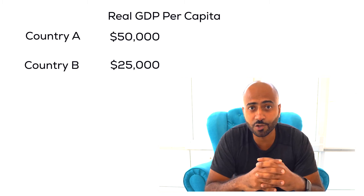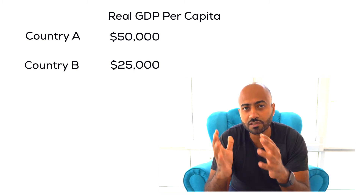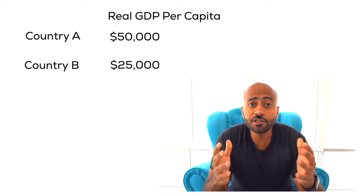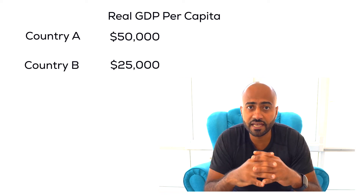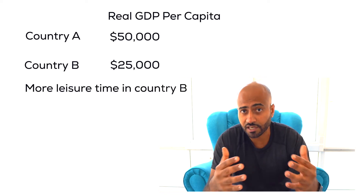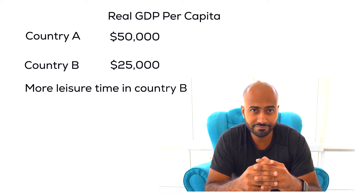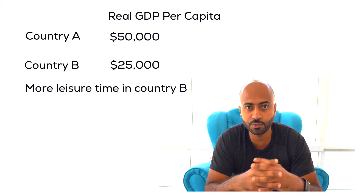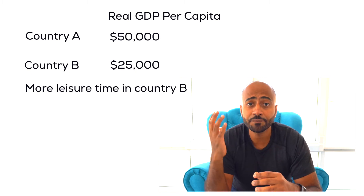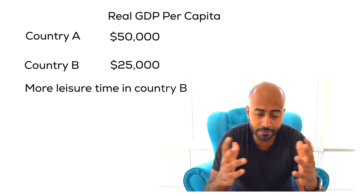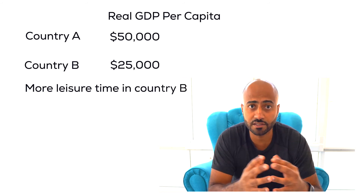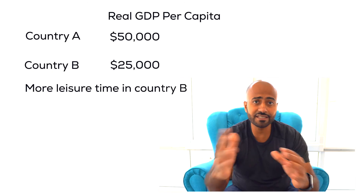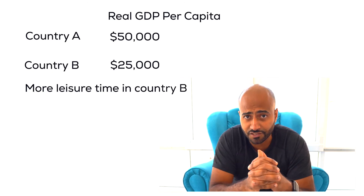Let's complicate things a bit. In Country B, people get 45 days of vacation per year, whereas in Country A they only get two weeks. Has that started shifting you from Country A to Country B? Maybe, maybe not — for some of us vacation time isn't enough to outweigh the higher living standard. The key point is that real GDP does not take leisure time into consideration.